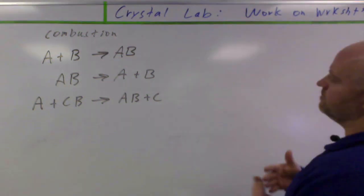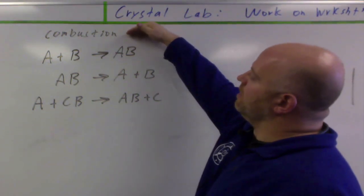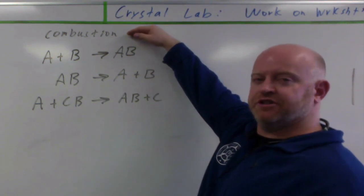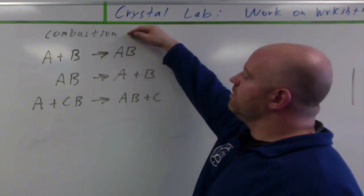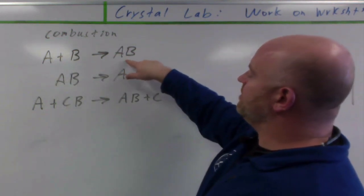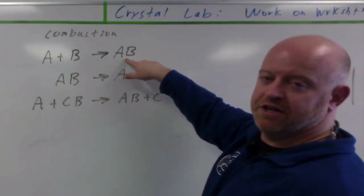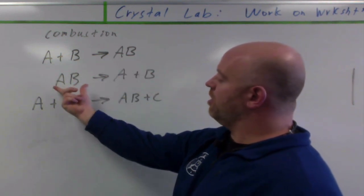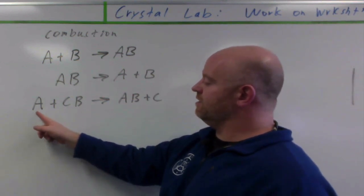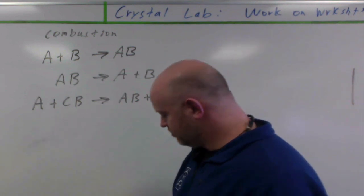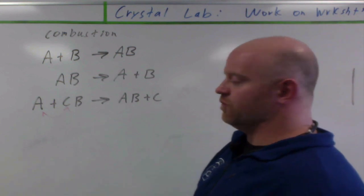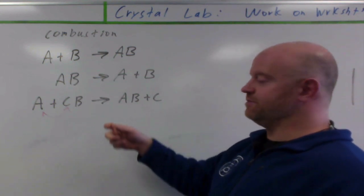So if we look up here on the board, we covered combustion reactions just recently — a very special type of reaction dealing with oxygen, making carbon dioxide and water. To start the unit, we took two single elements and put them together to make a compound in combination reactions. We took a compound and split it apart in a decomposition reaction. And then we took a single element plus a compound and had them trade partners — had A and C, if they're both metals, switch places in single displacement reactions.